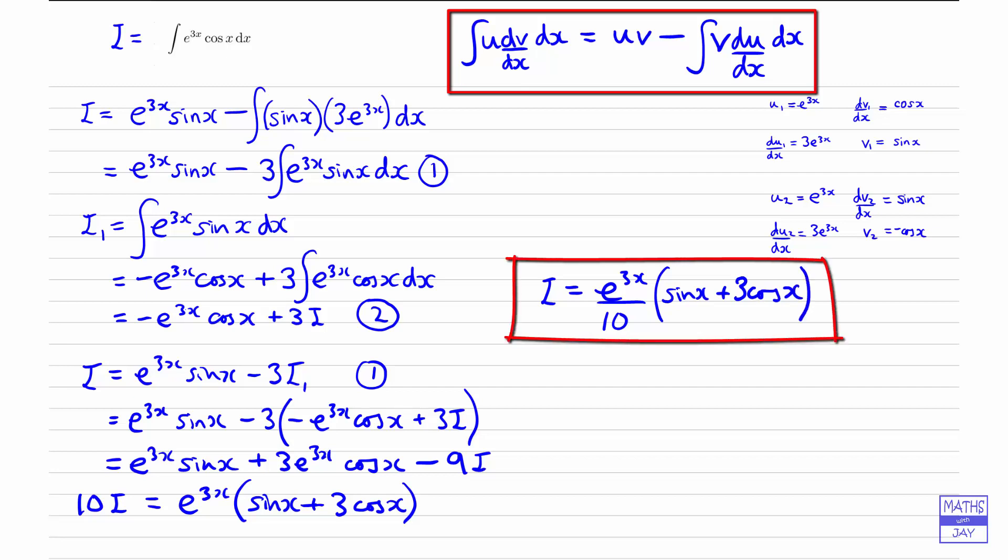So without doing any really hard integration, we've actually worked out what the integral is. And if you want to check your answer, how would you do that? Well, differentiate. So this is a product. And I'll leave you to do that to make sure that when you differentiate this answer, you do end up with e to the 3x cosx.